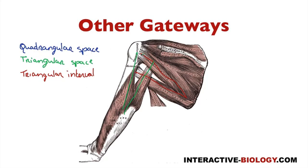When we look at these different spaces we can easily see what the borders are. The quadrangular space makes sense because it has four sides. Its superior border is teres minor, inferior border is teres major, medial border is the long head of the triceps, and lateral border is the neck of the humerus. You can take your fingers, put them in this arrangement, and quiz yourself.